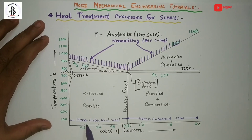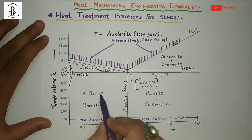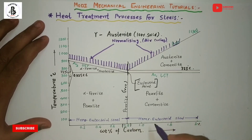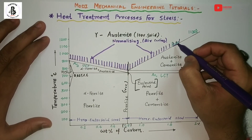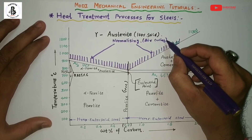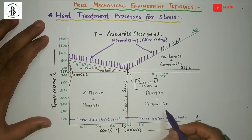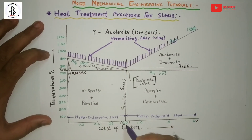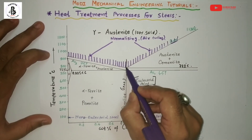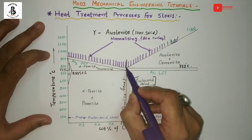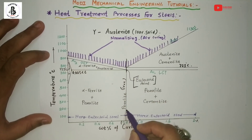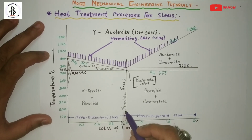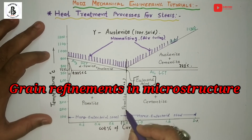For hypo-eutectoid steel, after heating and air cooling, you get alpha ferrite plus pearlite structure. For hyper-eutectoid steel heated 40–50°C above the ACM temperature, followed by air cooling, you get pearlite plus cementite structure. For 0.8% carbon (eutectoid steel), heating 40–50°C above 723°C and then air cooling gives 100% pearlitic structure. Pearlite is a proper mixture of alpha ferrite and cementite.